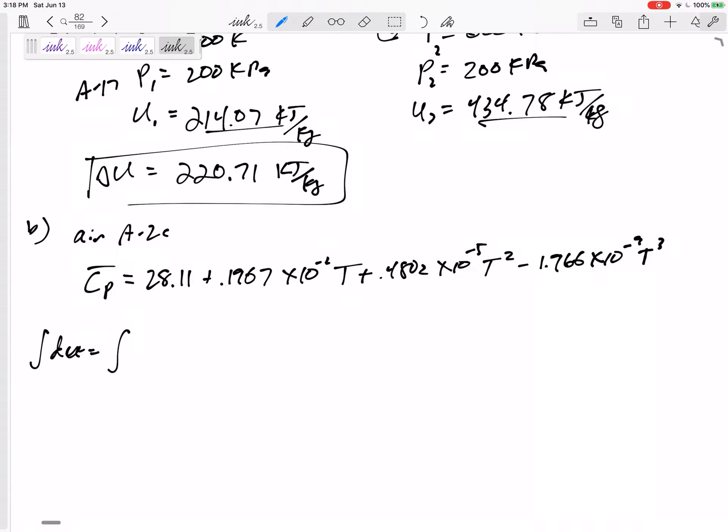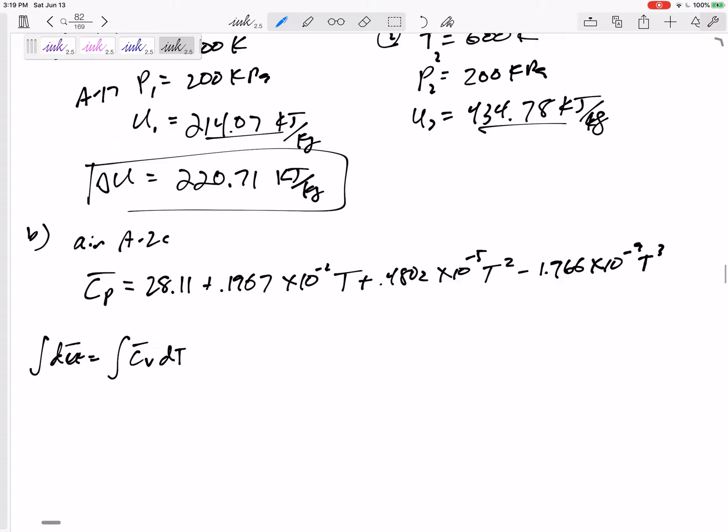If I want U or a change in U, then I want CV dT. This is going to give me U bar. How do I change CP to CV? I just subtract the universal gas constant 8.314. So I really want to take an integral of 28 minus 8.314, 19.796, and then these I'm going to copy, duplicate that right there, dT.